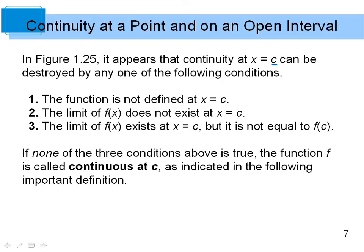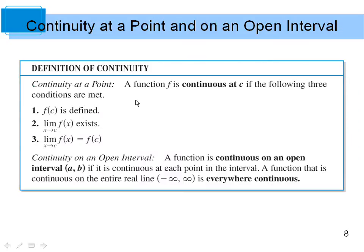Continuity at a value c can be destroyed by any of those three conditions: a hole in the graph, the limit not existing, or the limit existing but not equaling f(c). For a function to be continuous at c, three conditions must all be met: f(c) must be defined, the limit must exist approaching from both sides, and the limit must actually equal f(c).